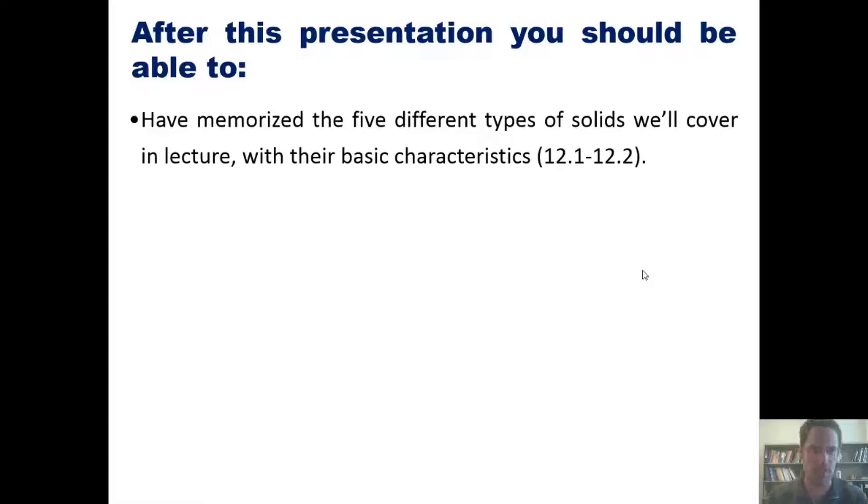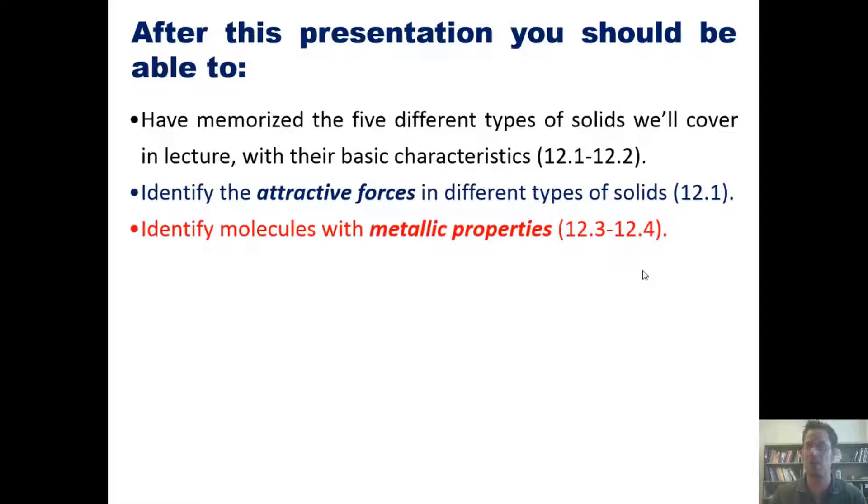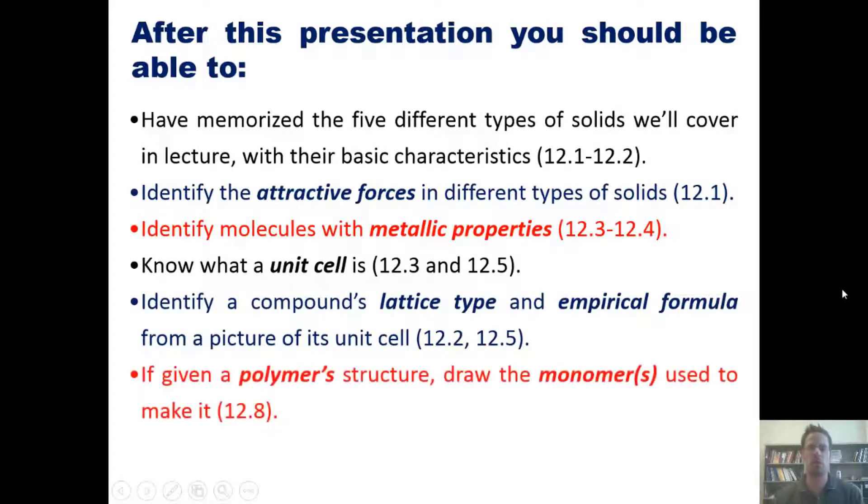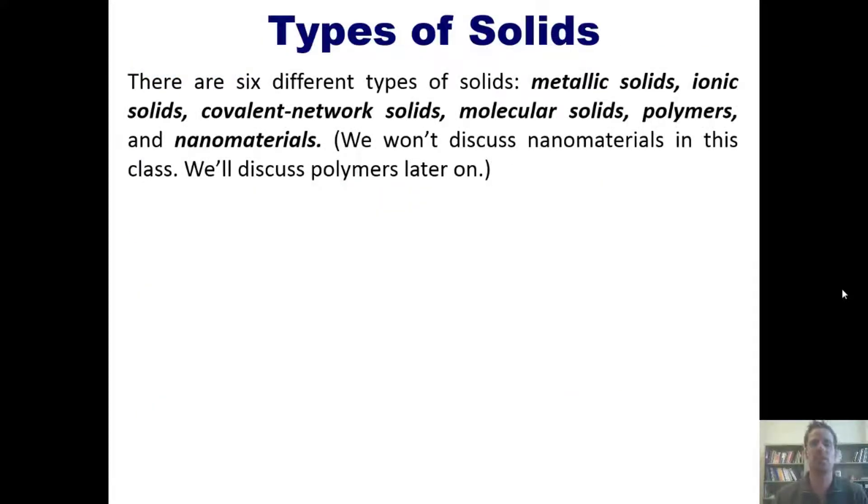In lecture, with their basic characteristics, identify the attractive forces in those different types of solids, identify molecules with metallic properties, know what a unit cell is, identify compounds' lattice type and empirical formula from a picture of its unit cell, and if given a polymer structure, draw the monomers used to make it. Please note that we will skip sections six, seven, and nine from the text.